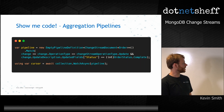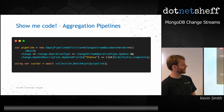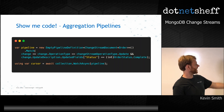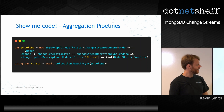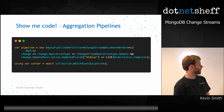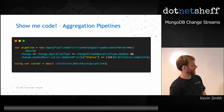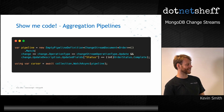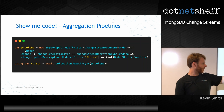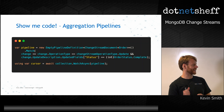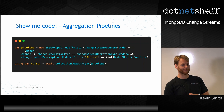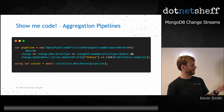That kind of looks like this. We create an empty pipeline definition of a change stream document order and it's got a bunch of extension methods. You can do a dot-match and say match it when the operation type is 'updated' and the updated field 'status' is set to 'completed'. So if we watch that collection based on that pipeline, we'll only get information when the document is updated and the status is changed to completed — meaning we can listen and send an email every time an order completes.